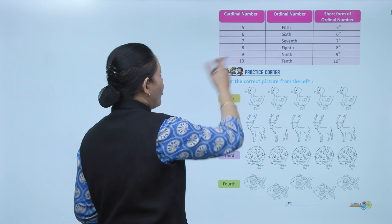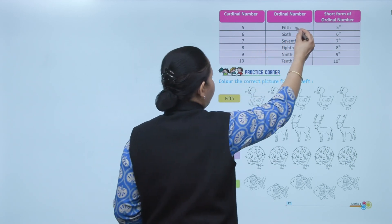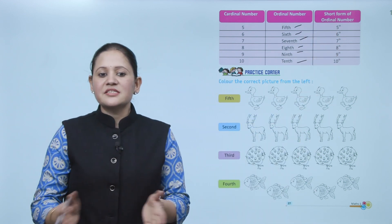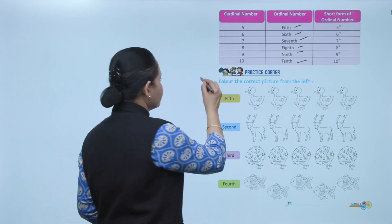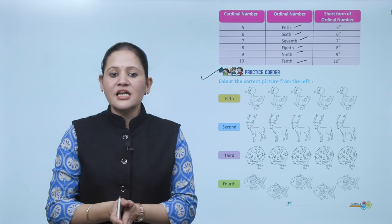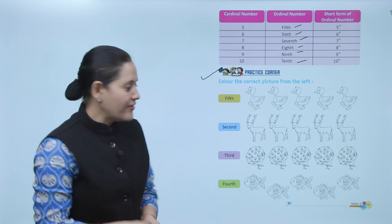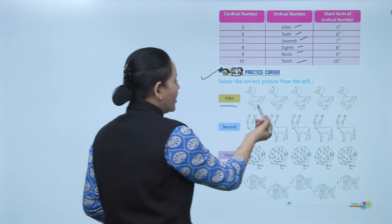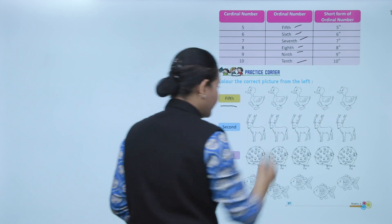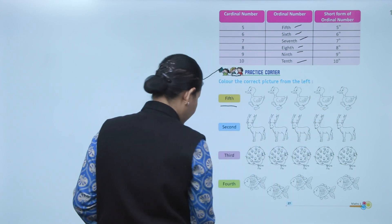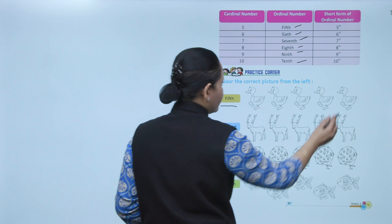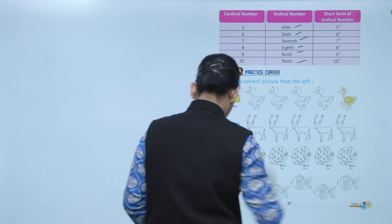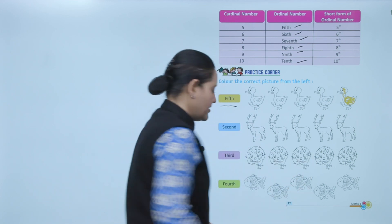From 5th to 10th — the ordinal numbers are 5th, 6th, 7th, 8th, 9th, and 10th. Practice corner: color the correct picture from the left — the 5th one. Start from the left: one, two, three, four, five — so color the 5th picture. Clear.